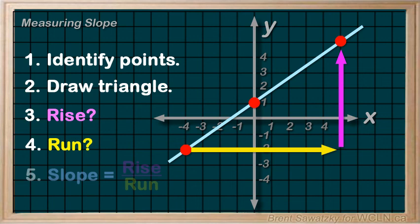And finally, we represent the ratio of the rise and run as a division or fraction. And then reduce if possible.